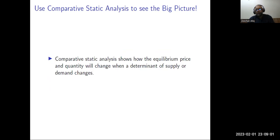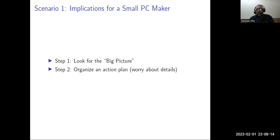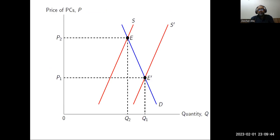We do this comparative static analysis to see the big picture — how the equilibrium price and quantity will change when the determinants of supply and demand change. The first step is to identify what is happening: the cost of production is going down, meaning PC manufacturers will get components at a lower price. As a determinant of the supply curve, when the cost of production falls, supply increases. This cost of production is a factor kept constant when we define the supply-price relationship. If the cost of production falls, you can supply more at the same price. If it rises, you supply a lower quantity at the same price.